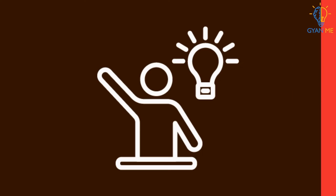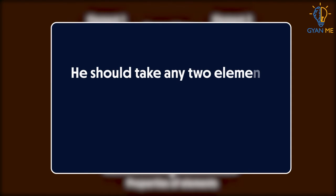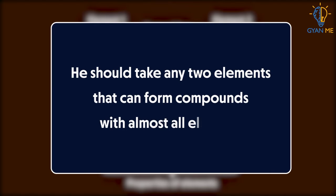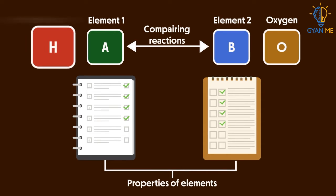Mendeleev realized that the properties of elements could be best compared by comparing their reactions. He thought for this, he should take any two elements that can react and form compounds with almost all elements. So he chose oxygen and hydrogen.